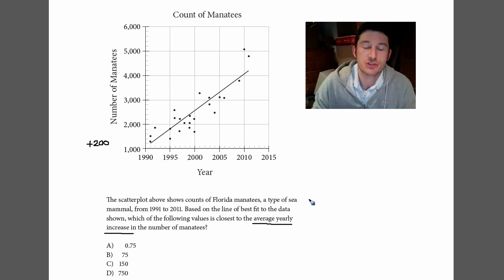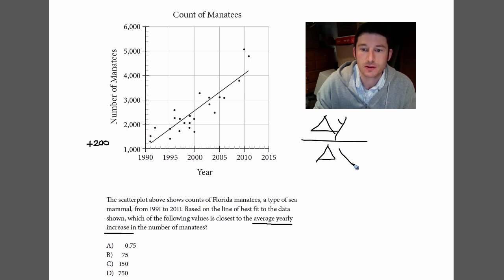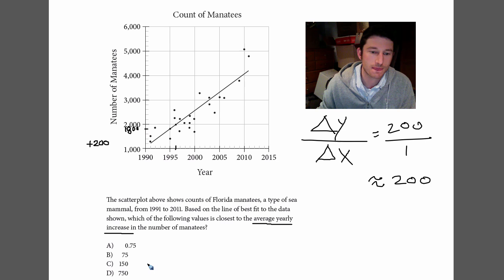So if I want to find the average yearly increase, I'm going to look at the change - change in Y over change in X. That's your slope. How much did it go up, let's say, from '95 to '96? In '96 we're at about 2,000, and in '95, right over here, it was about 1,800. So it looks like it's going up 200 manatees from '95 to '96. That's one year, so about 200. Now, that's not really an answer choice, so I'm going to say it's 150. That's our best choice, but how could we do this to be a little more accurate?